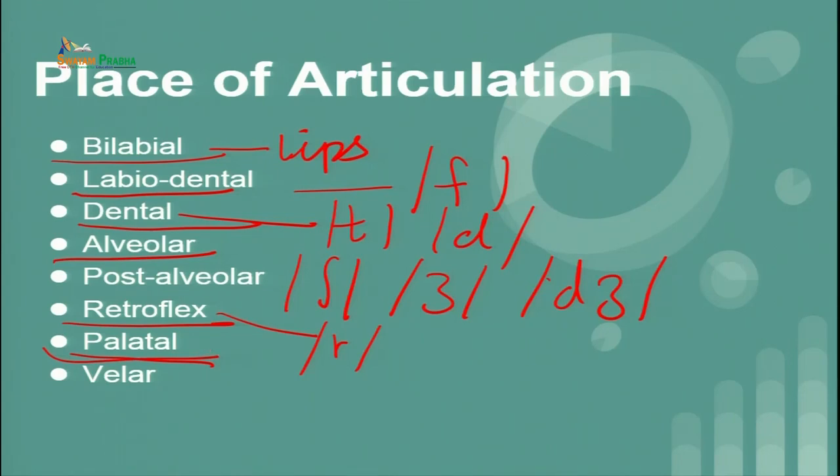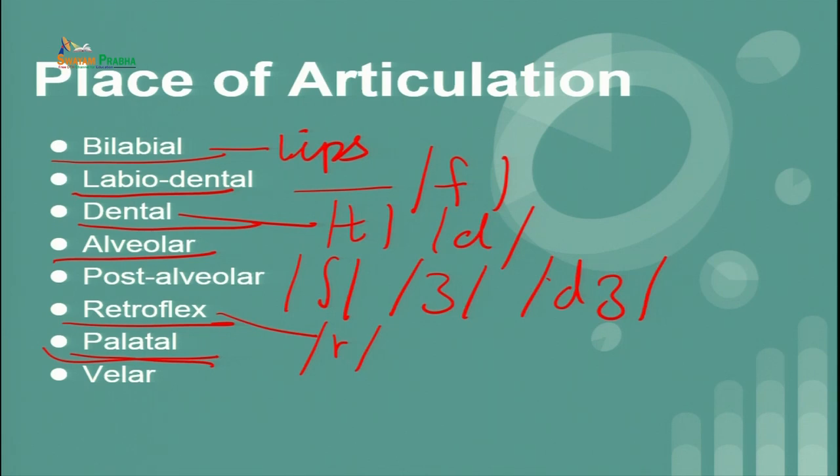In velar sounds, the velum or soft palate is involved. When you go back in your vocal tract, after the hard palate there is the velum — the soft palate. Many sounds are produced when you raise or lower the velum. Velar sounds involve the back of the tongue raising or touching the soft palate. In the sound 'ka,' it is not the hard palate, teeth, or alveolar ridge that is involved; rather your tongue approaches the soft palate.